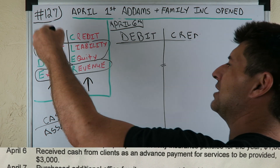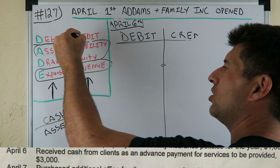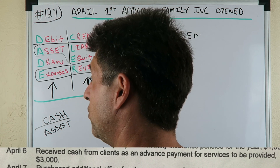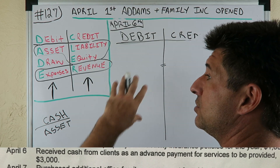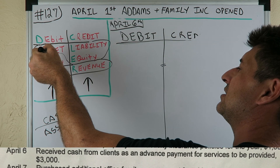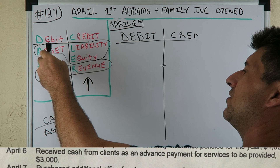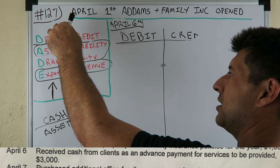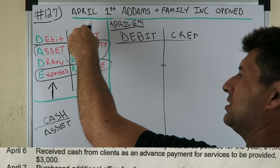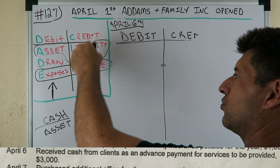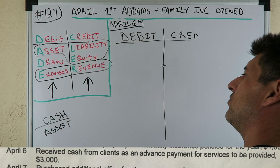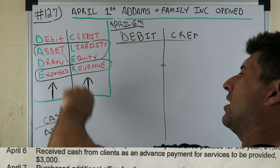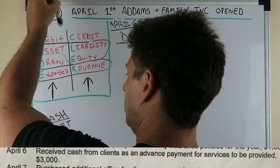Now let's see — we got debit, we got DCADLE. If you don't know this and you're doing Accounting 101, you're missing out. Debit: asset, draw, expense. If those are going up, you will debit it. If asset, draw, and expense are decreasing in value, you will credit it. Liability, equity, and revenue — if they're increasing in value, you credit it. If they're decreasing in value, you debit it.